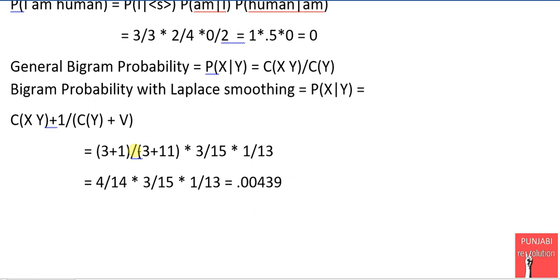Because if we do not normalize by vocabulary, the overall probability will exceed 1. So to fix that problem, we will normalize it by adding V in all the conditional probabilities.